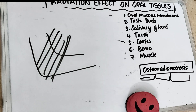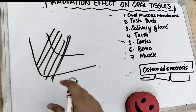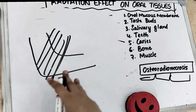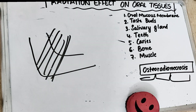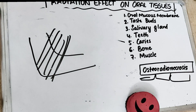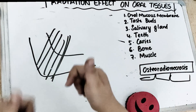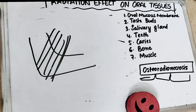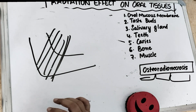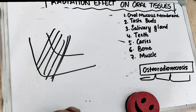These are the radiation effects on the oral tissues. The next video will cover acute radiation syndrome, where radiation is given to the whole body, not just the oral tissues. If you enjoyed this video, give it a thumbs up, comment below, and there is a link in the description to support on Patreon. Keep reading, keep learning, stay motivated — see you in the next video.